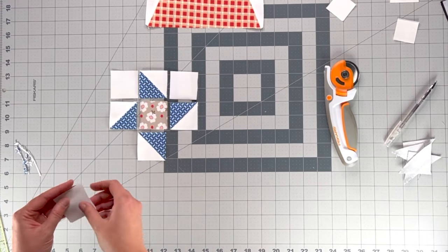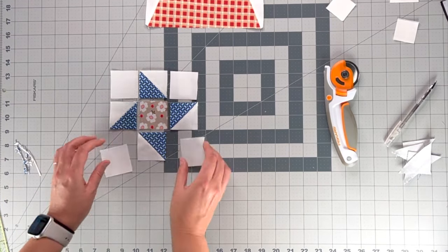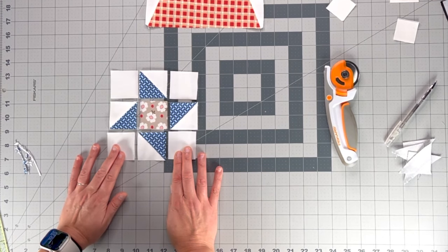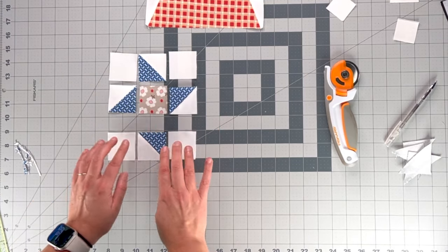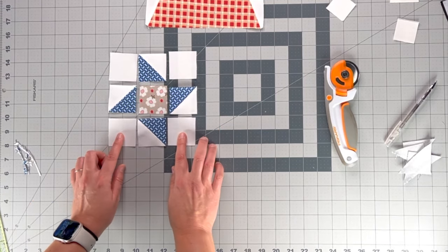And then we add our background squares. And then I'm going to sew these into rows. So I'll sew this row first, this row second, and then this row last.